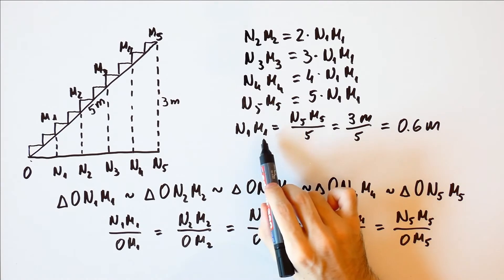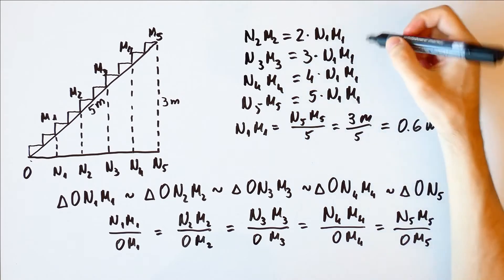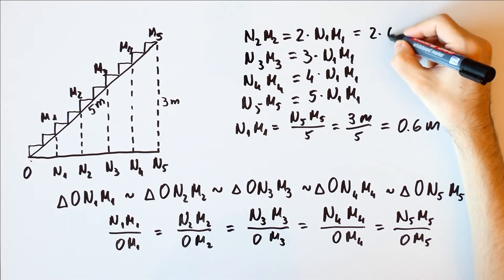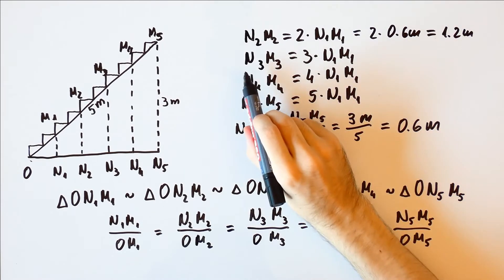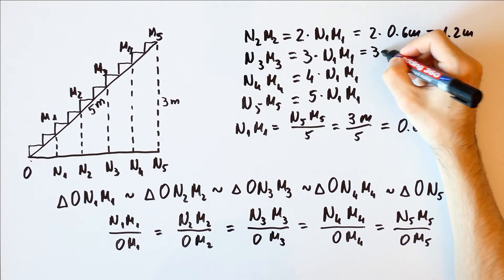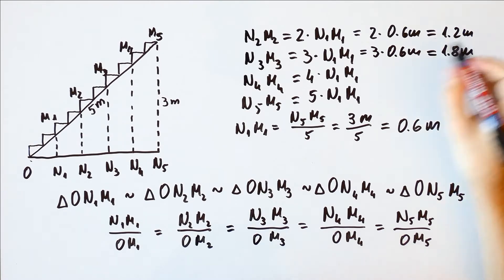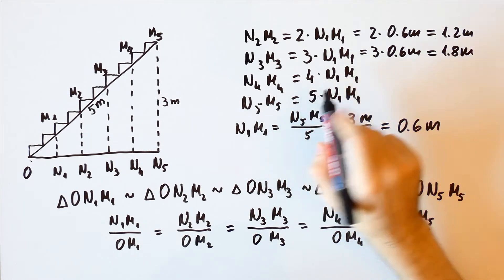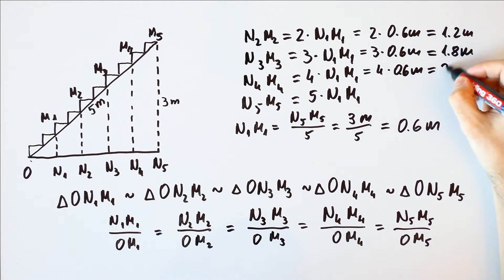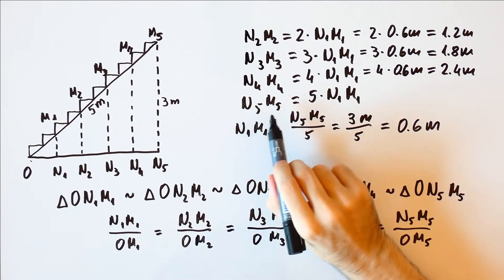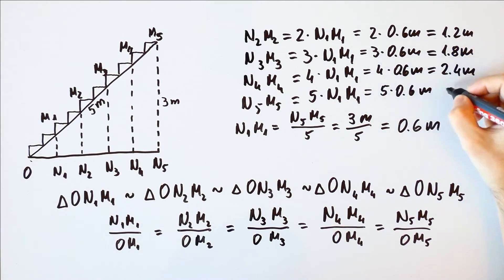Now that we know N1-M1, we can calculate: N2-M2 = 2 × 0.6 = 1.2 meters. N3-M3 = 3 × 0.6 = 1.8 meters. N4-M4 = 4 × 0.6 = 2.4 meters. And N5-M5 = 5 × 0.6 = 3 meters.